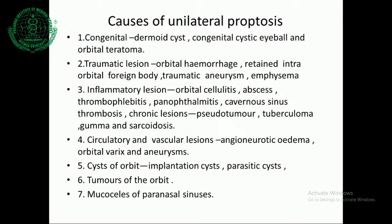Causes of unilateral proptosis: congenital causes include dermoid cysts, congenital cystic eyeball, and orbital teratoma. Traumatic lesions include orbital haemorrhage, retained intraocular foreign body, and traumatic aneurysm. Inflammatory lesions include orbital cellulitis, orbital abscess, thrombophlebitis, panophthalmitis, cavernous sinus thrombosis, and chronic lesions like pseudotumour, tuberculoma, gumma, and sarcoidosis. Circulatory and vascular lesions include angioneurotic oedema, orbital varix, and aneurysm. Cysts of the orbit include implantation cysts and parasitic cysts. Tumours of the orbit can be congenital, benign, or malignant, arising from orbital tissue or mucoceles of the paranasal sinus.